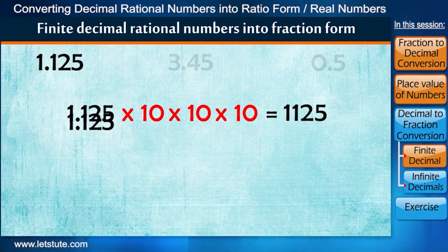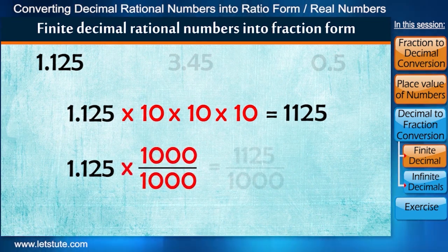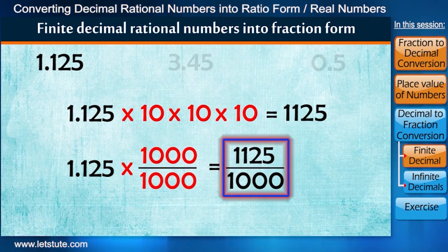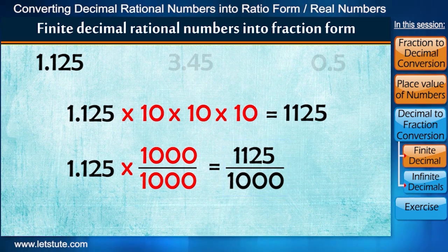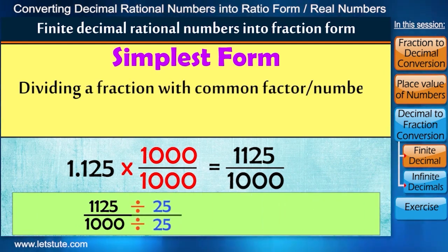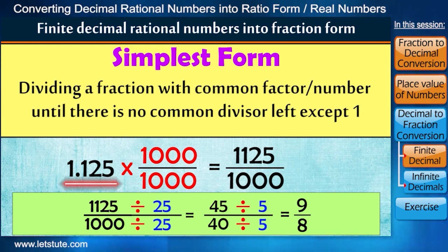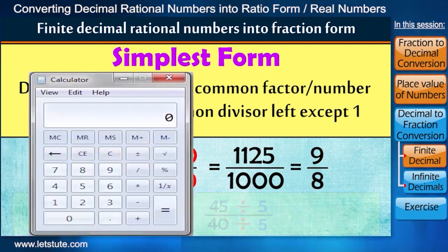Therefore, to write the number 1.125 in fraction form, we multiply and divide by 1000. We also write this fraction into its simplest form. And by simplest form, we understand that we divide this fraction with common factors until there is no common divisor left except one. So 1.125 can be rewritten as the fraction 9 upon 8. Let's cross-check this.